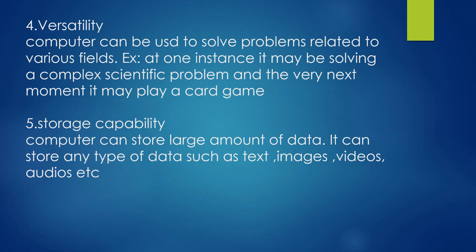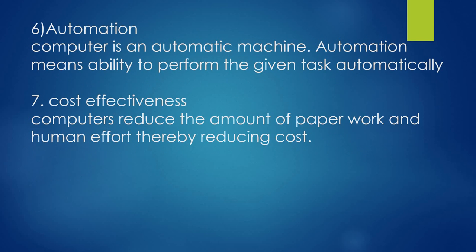What is storage capability? The computer can store a large amount of data. It can also store different types of data — text, images, audios, videos, etc. That is storage capability. Then, automation — the computer is an automatic machine. Automation means the ability to perform a given task automatically; the computer performs all its operations automatically.